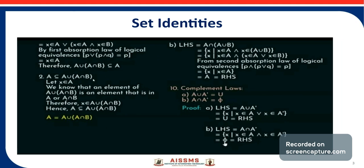Now consider the second part: A is a subset of A union (A intersection B). We know that an element of A union (A intersection B) is an element that is in A or in A intersection B. Therefore X belongs to A union (A intersection B), so A is a subset of A union (A intersection B). Thus A equals A union (A intersection B).